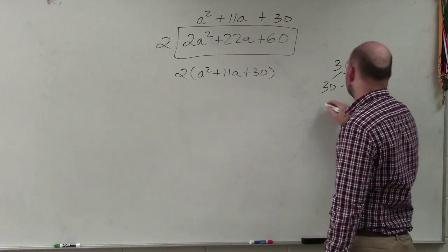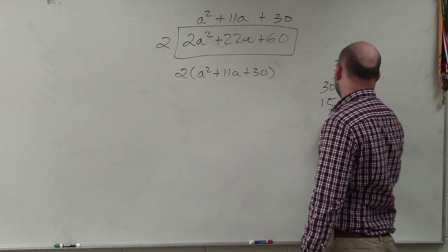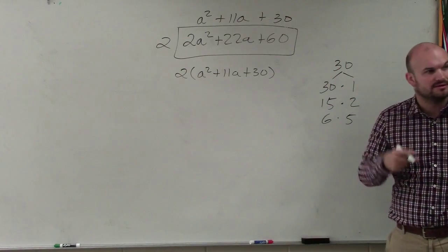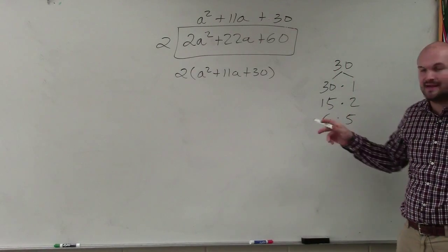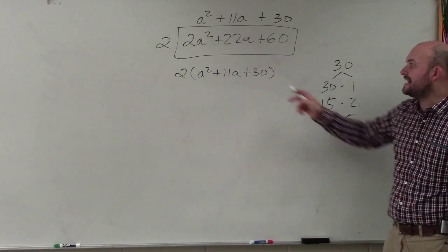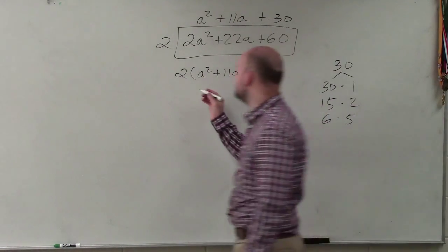So again, in your head, you're going to want to list out all of the factors that multiply to give you 30. So in my head, I'm thinking of these. And then I'm thinking, which of these factors add to give me a positive 11? We can see that's 6 and 5.